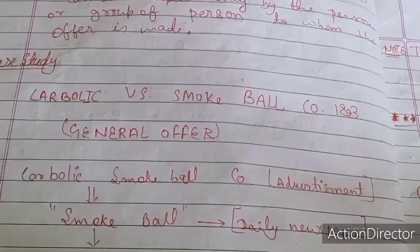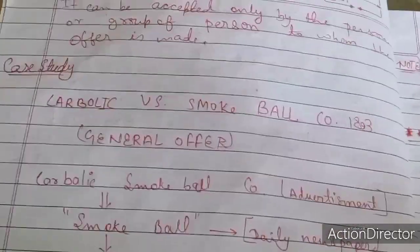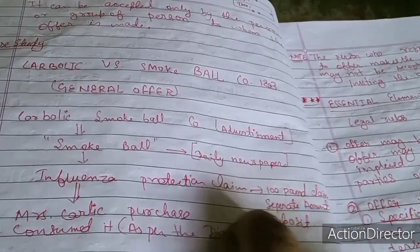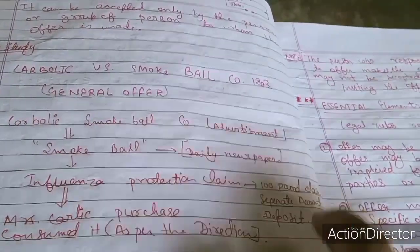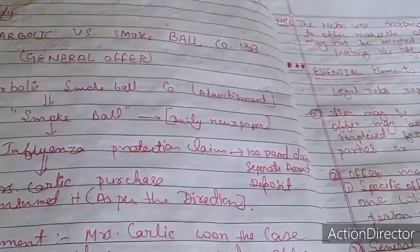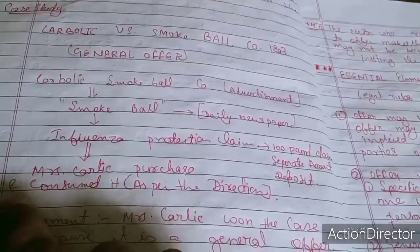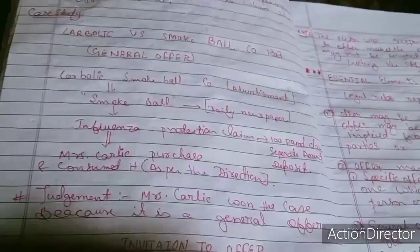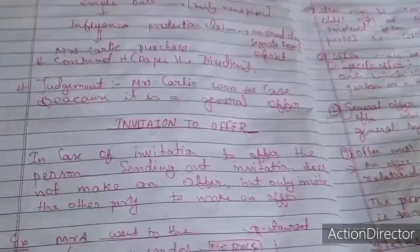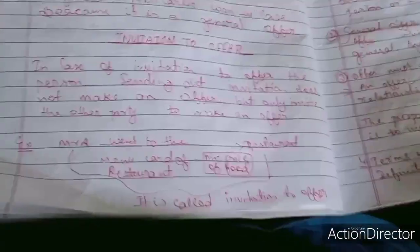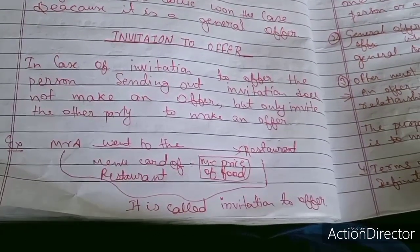Now we have a case study: Carbolic Smoke Ball Company, 1893. This is an example of a general offer. The Smoke Ball company published an advertisement in the Daily News making influenza protection claims. Mrs. Carlill purchased and used the product as per the directions. The court's judgment was that Mrs. Carlill won the case because it was a general offer, which anyone could accept.